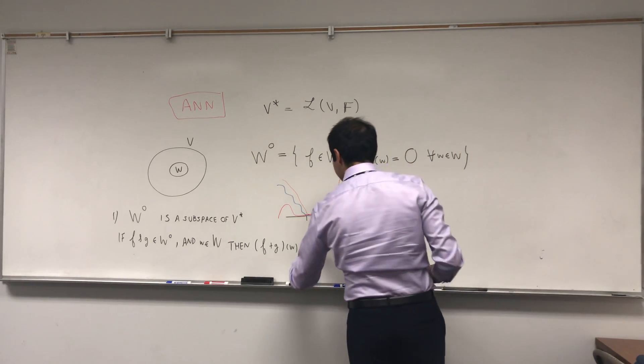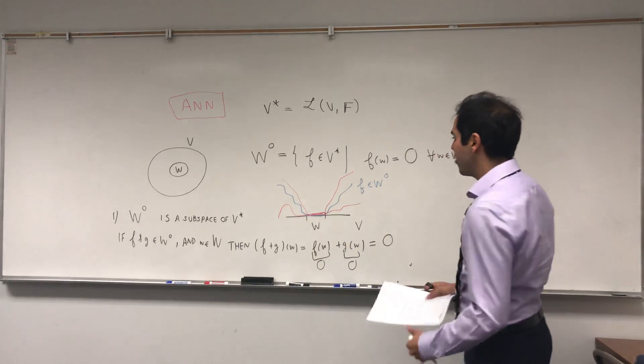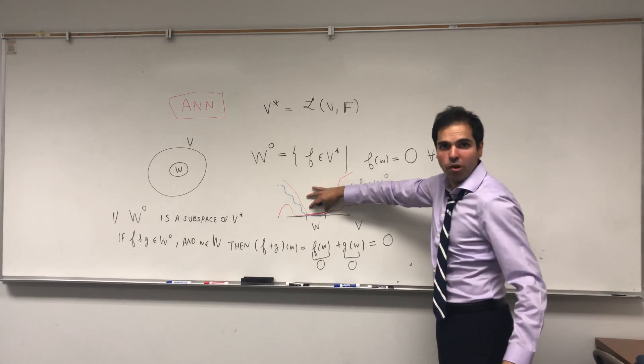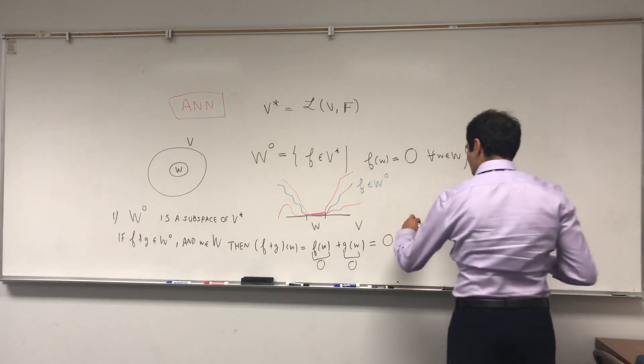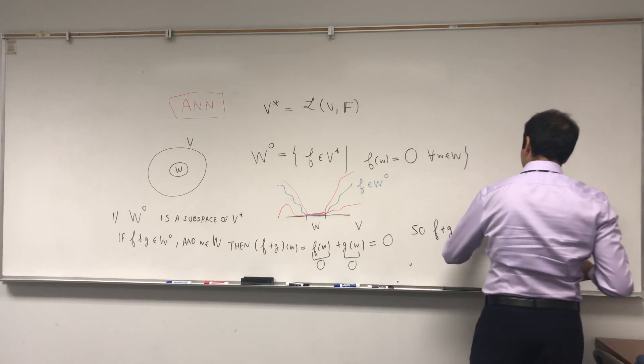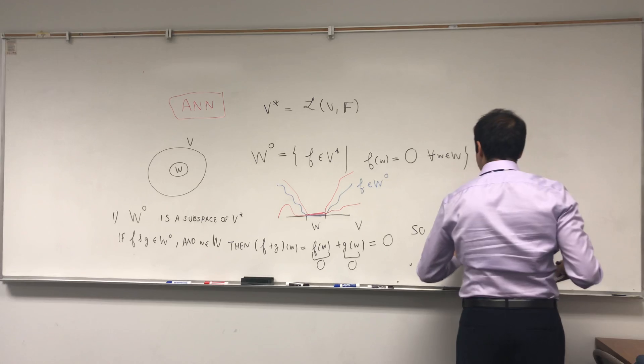So this is zero and this is zero, so we get that this is zero. In particular, F plus G is also zero on our subspace. So F plus G equals zero on W, but that's precisely the definition of being in the annihilator.